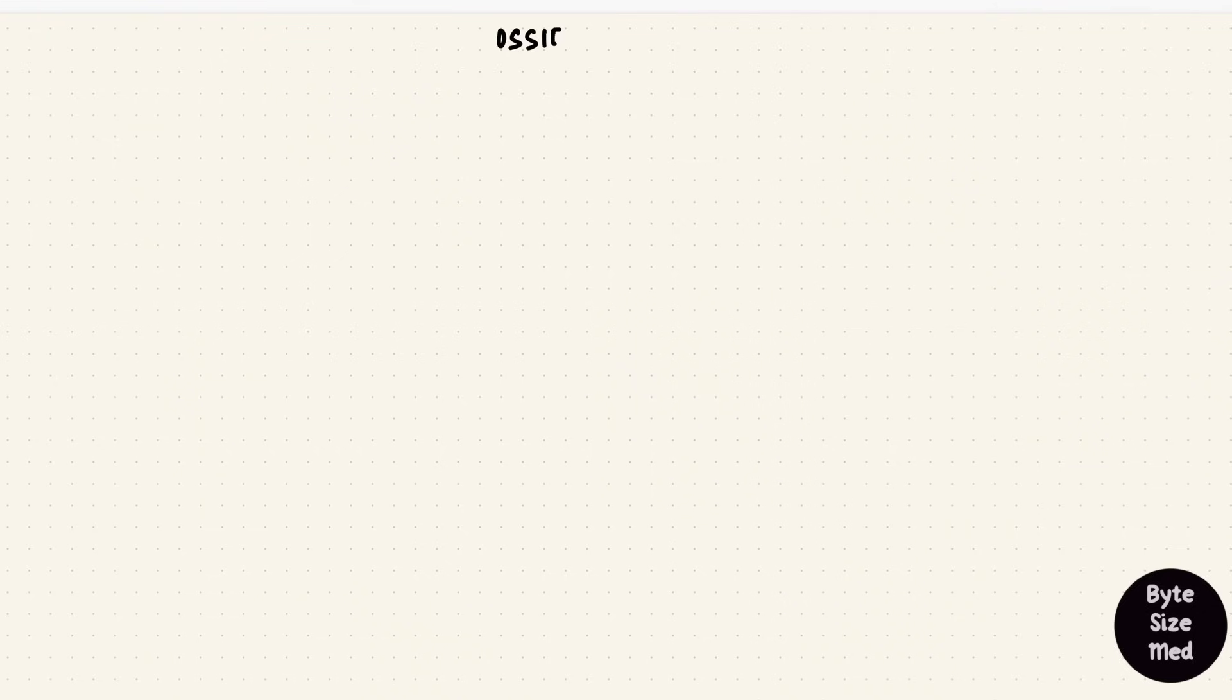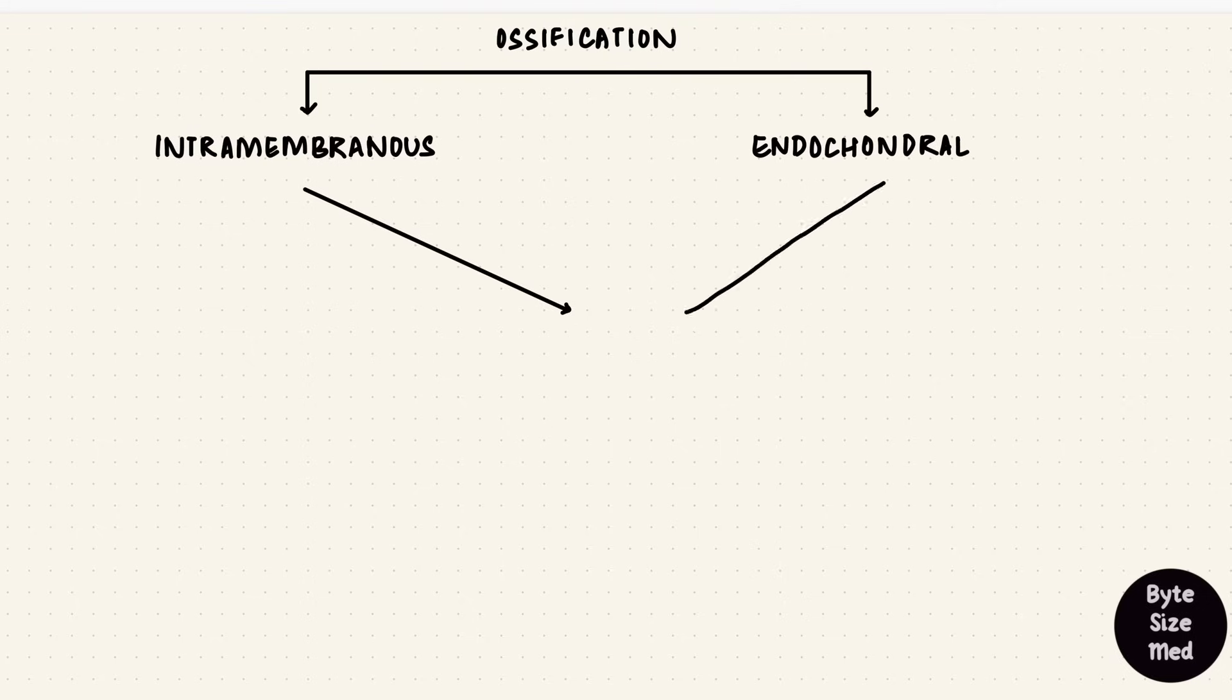Now we look at how bone forms. There are two general ways by which ossification can happen: intramembranous and endochondral ossification. In the end, they both form bone. But how they do that is where they differ.